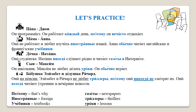Бабушка Элизабет и дедушка Ричард. Они на пенсии. Элизабет и Ричард не любят триллеры, поэтому они никогда не смотрят их. Они всегда читают утренние и вечерние новости. — Grandma Elizabeth and Granddad Richard. They are retired. Elizabeth and Richard don't love thrillers. That's why they never watch them. They always read morning and evening news. Notice the use of the phrase на пенсии, which means 'to be retired,' similar to пенсионеры (pensioners).